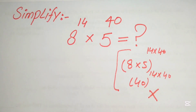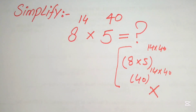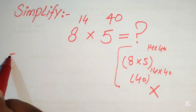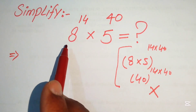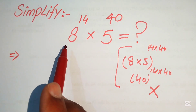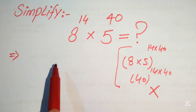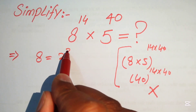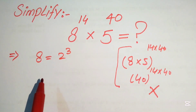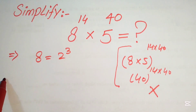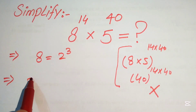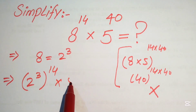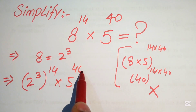Now I will tell you the correct way to solve this problem. First, you need to write the base of the first term in prime factor form. We know that 8 equals 2 cubed. So our given expression is rewritten as (2 cubed) to the power of 14, multiplied by 5 to the power of 40.